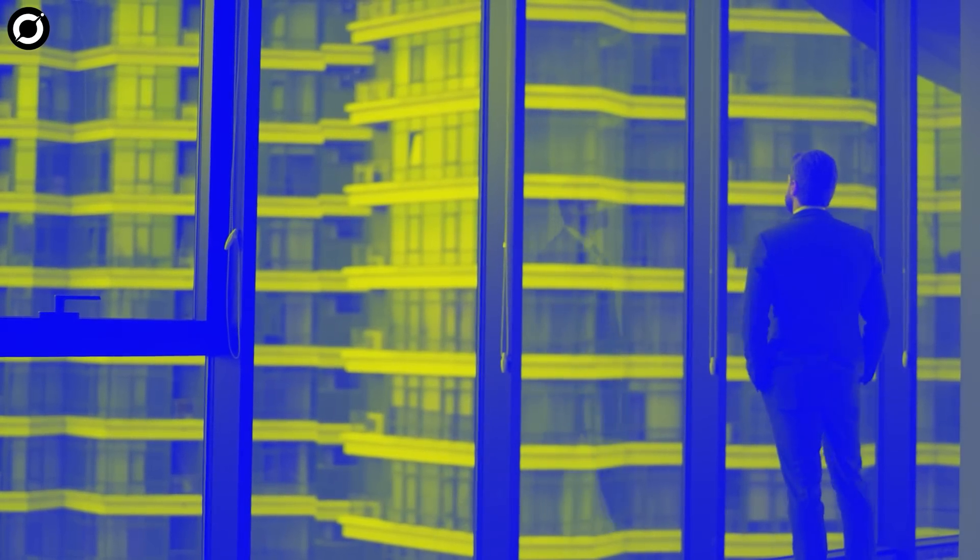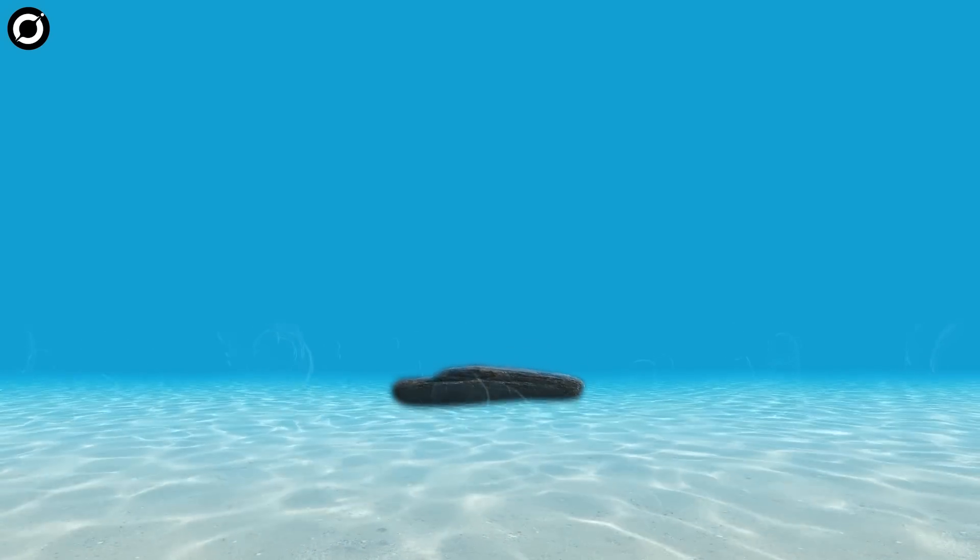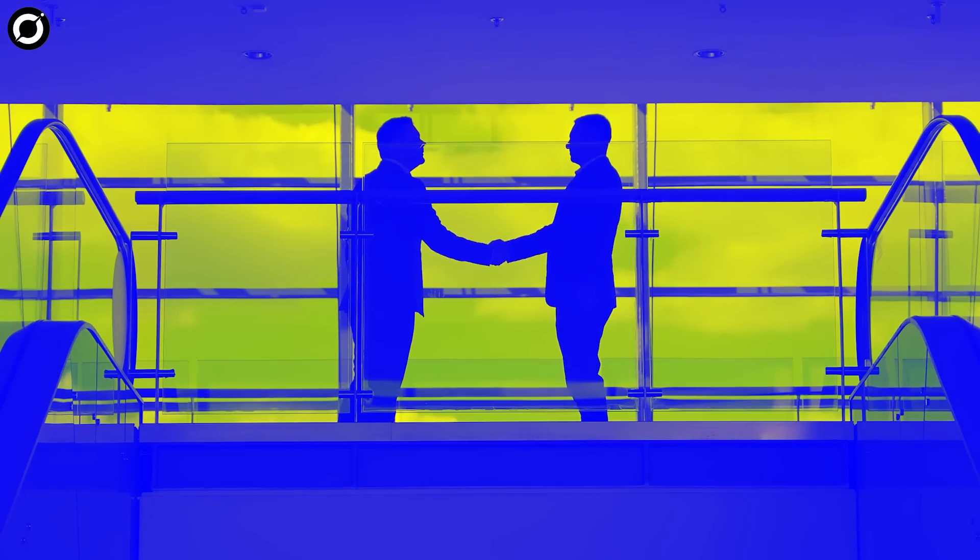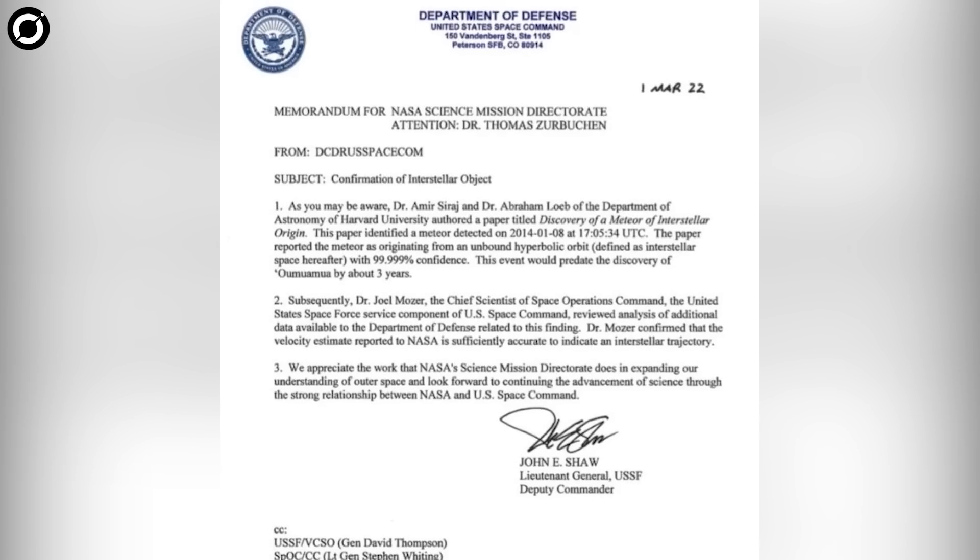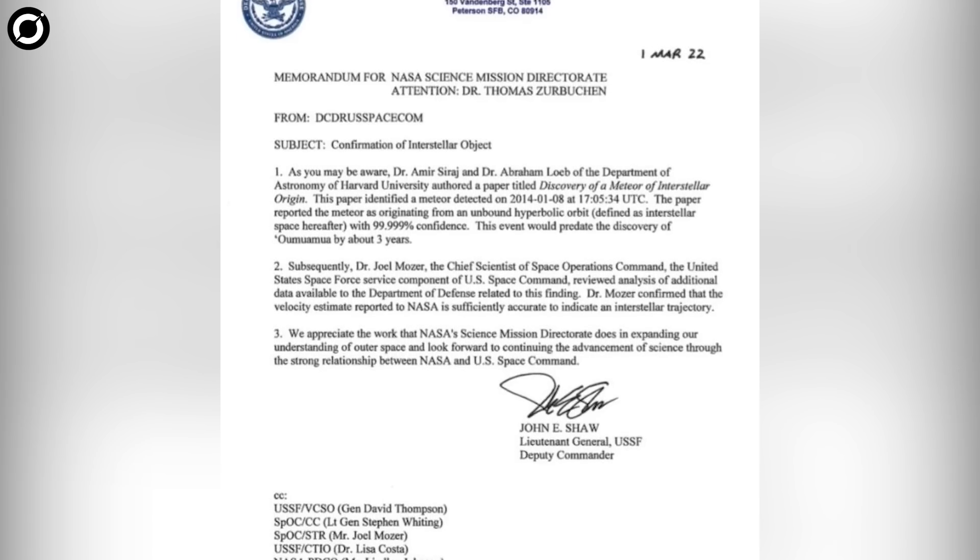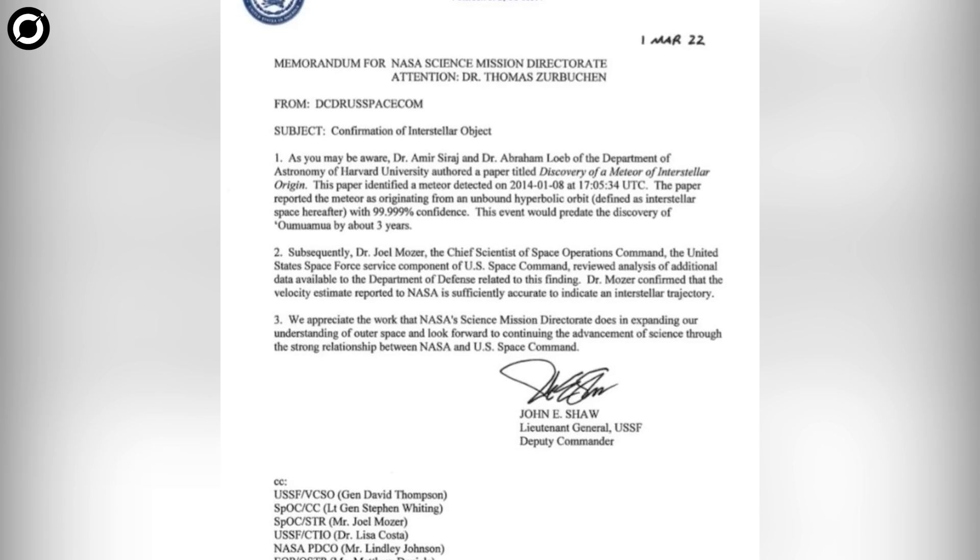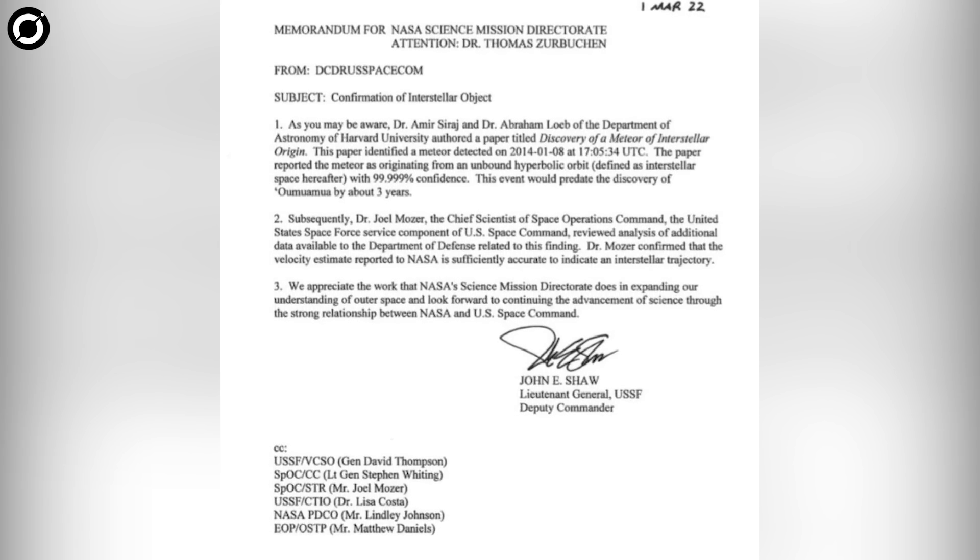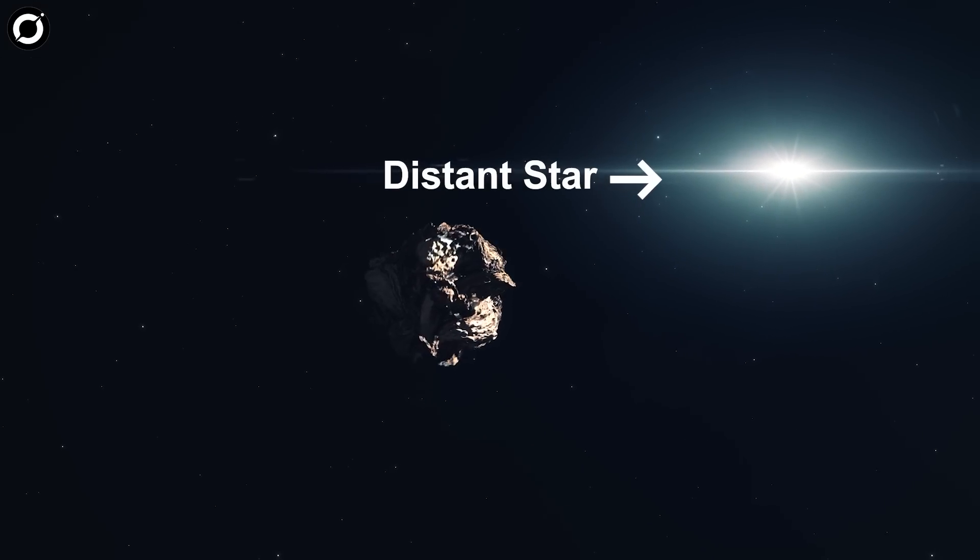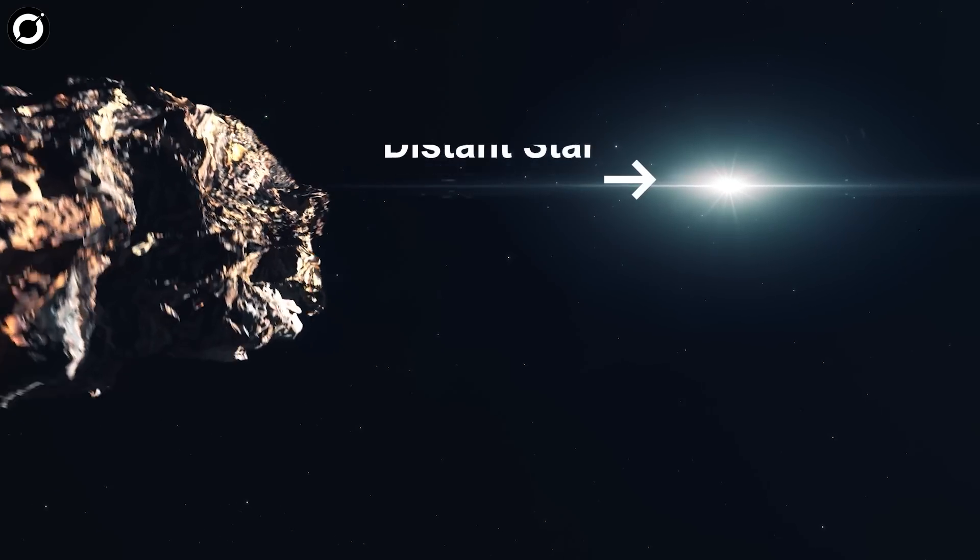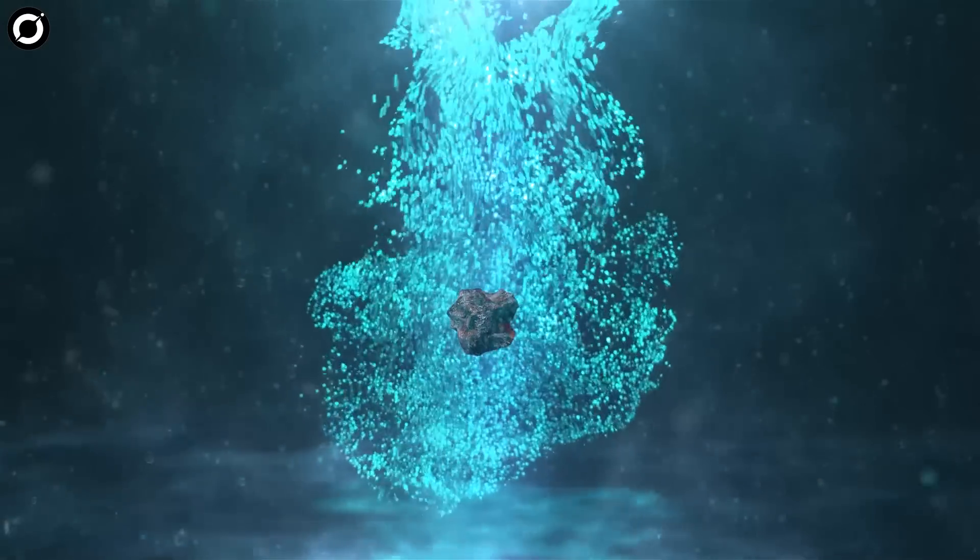However, the story doesn't end there. If anything, it has only begun, thanks to a partnership between the Department of Defense and NASA. Three years later, in 2022, the data describing the event eventually were shared on a public database, along with data for more than 900 other fireballs recorded by US government sensors between 1988 and the present day. The 2014 meteor is now officially the first known object originating from outside our solar system, and its fragments are buried deep inside our waters.